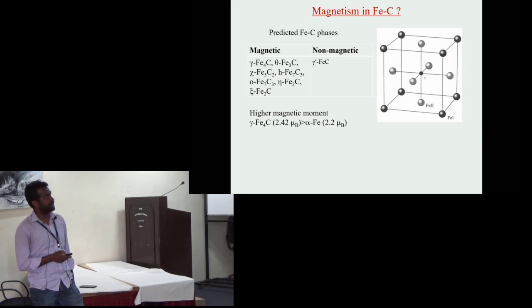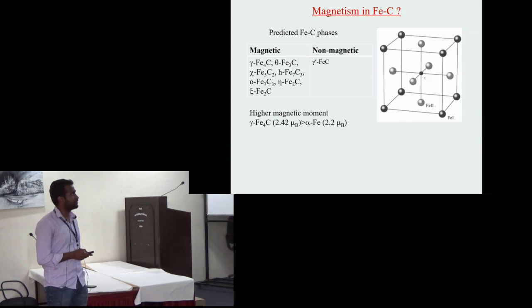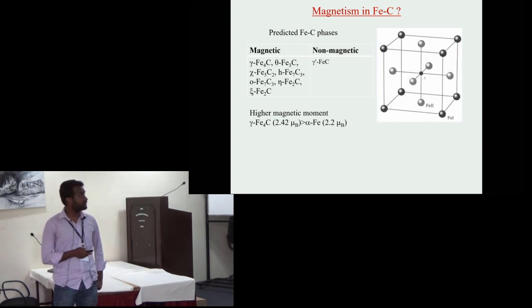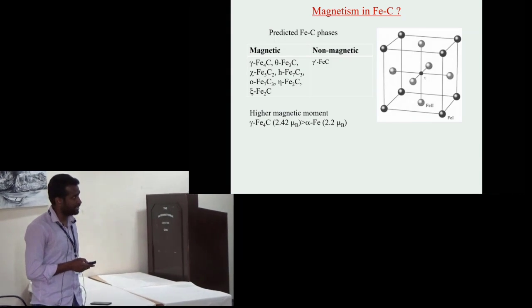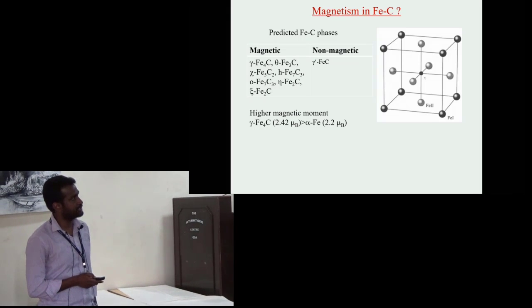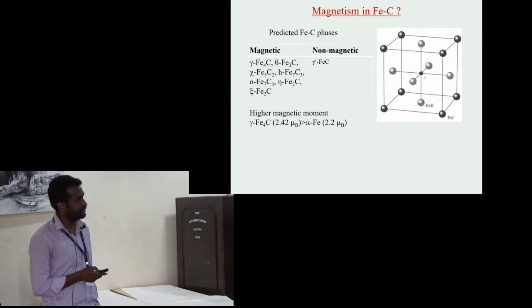Iron carbide forms various phases except iron monocarbide. Other phases are magnetic, but some phases like Fe5C4 are very interesting due to their higher magnetic moment. The origin of such higher magnetic moment can be understood in terms of volume expansion.